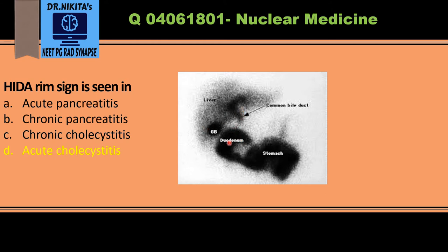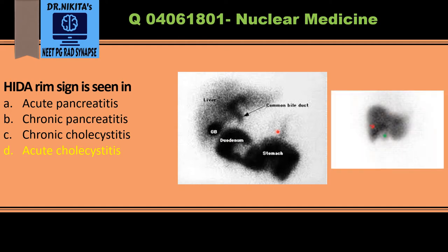In acute cholecystitis, this gray area marks the photopenic gallbladder, meaning the gallbladder is not visualized. However, we see increased uptake — the black area superior to the gallbladder fossa in the liver parenchyma. This is the HIDA rim sign, which refers to the uptake surrounding the gallbladder fossa. It is due to inflammation spreading to the adjacent liver parenchyma, causing tracer uptake in that region.